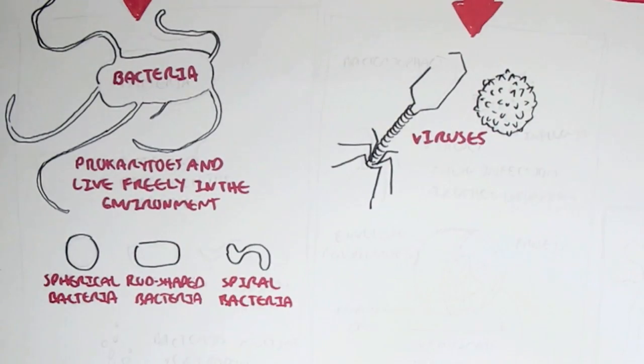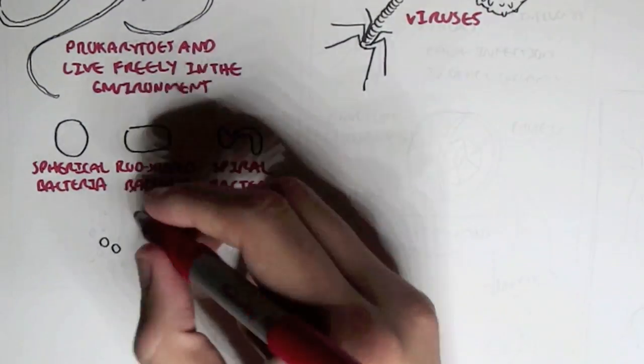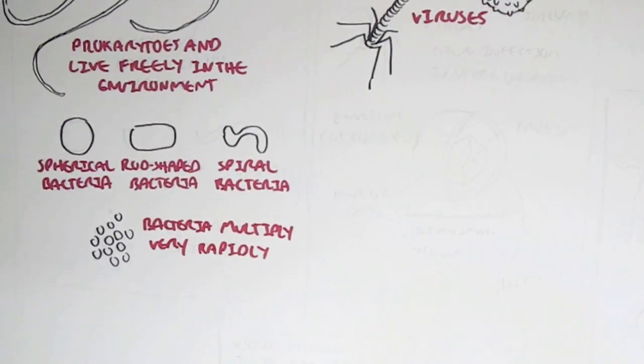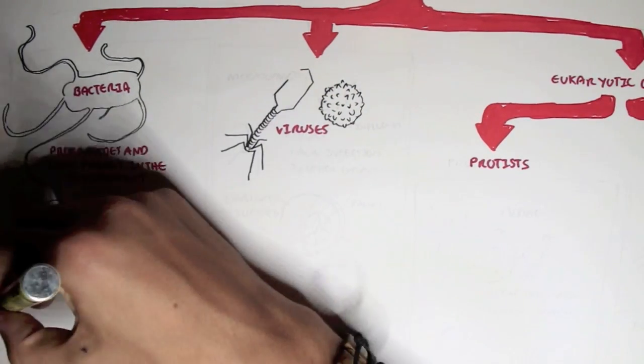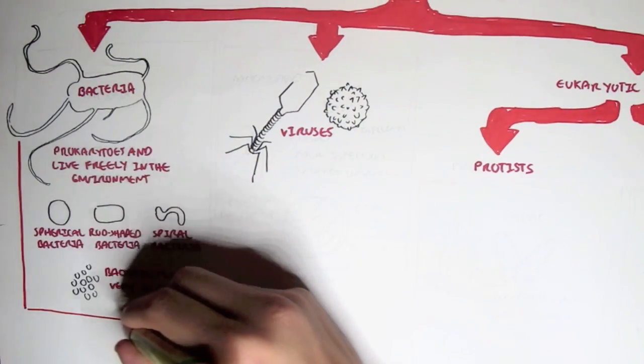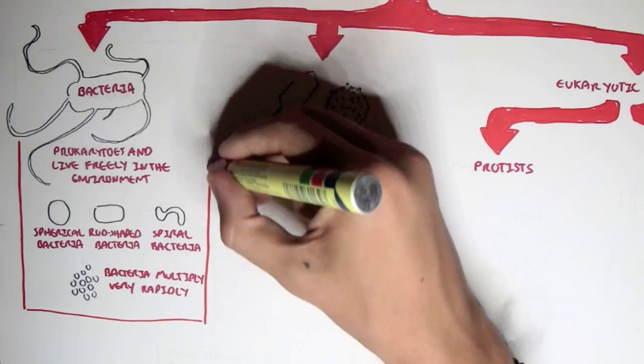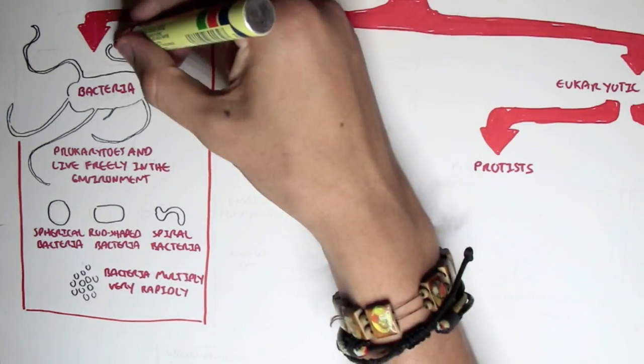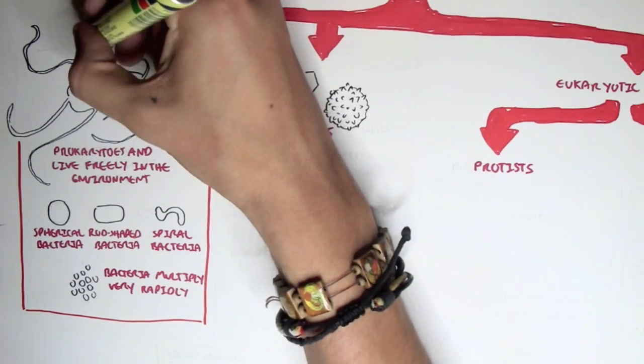And a very important thing to know is that bacteria multiply very rapidly. And so this is why if we put a smudge of our hair or whatever inside a petri dish, we can see that bacteria will form colonies there within the next few days. And so we can say that bacteria multiply very rapidly.